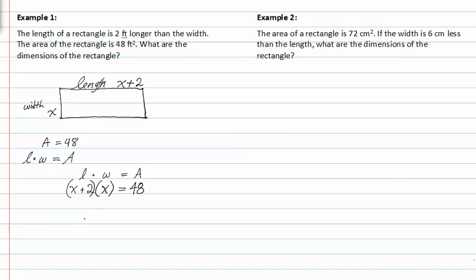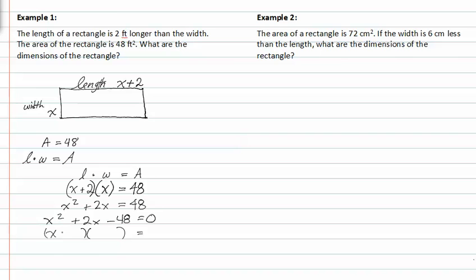So now I can solve it. We get x squared plus two x equals forty-eight. I need to find the dimensions of the rectangle, so I need to find x so that I can find the length. Setting it equal to zero, I get x squared plus two x minus forty-eight equals zero. Factoring that, I get (x plus eight)(x minus six). Setting my factors equal to zero, I get x equals negative eight and x equals six.